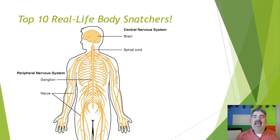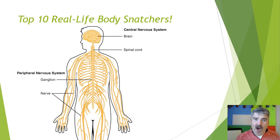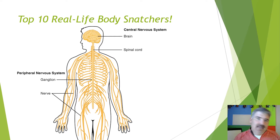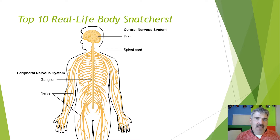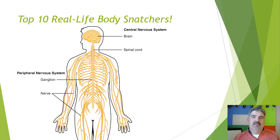But once inside, the hair worm grows three to four times as long as the cricket, filling all parts of its body except the head and legs. Can you imagine having a worm inside of you that's four times as long as you are tall, filling up your entire body except for your head and legs? If you're five feet tall, that's like having a 20-foot long worm in you. Gross! But let's get back to the text and find out more about this poor cricket.